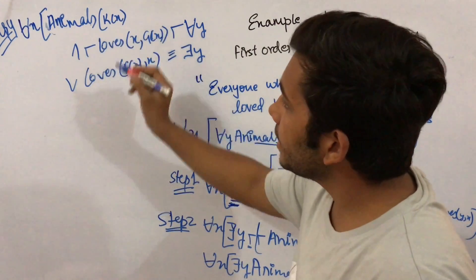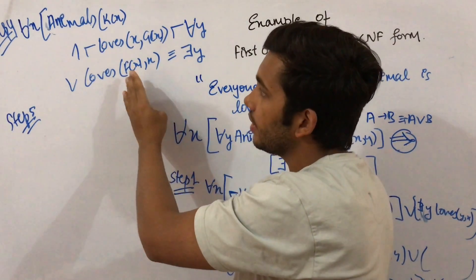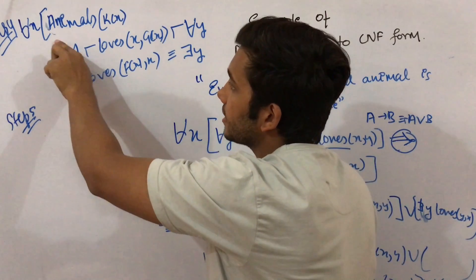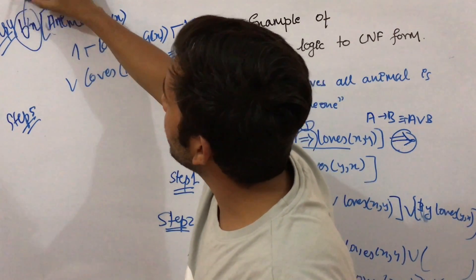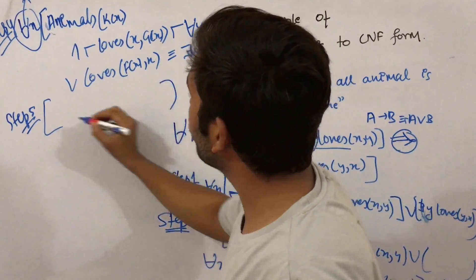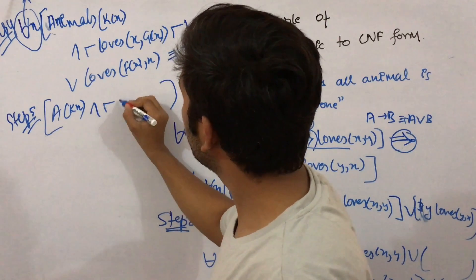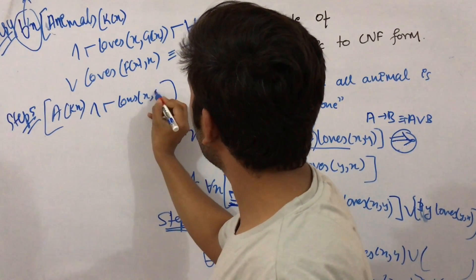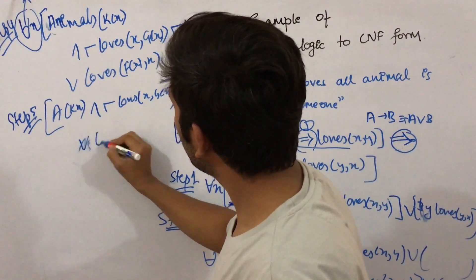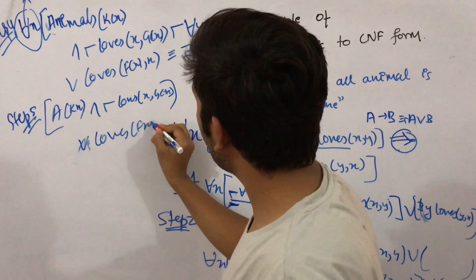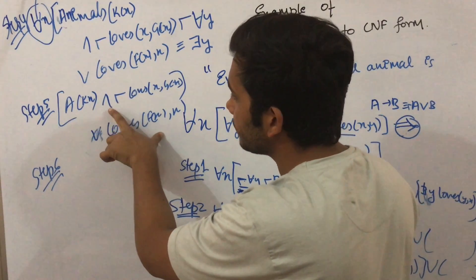In step five, we put all the universal quantifiers to the left of the expression. Here the expression is already on the left, so we eliminate the universal quantifier directly and write the rest of the statement as: animals(g(X)) and negation of loves(X, g(X)), or loves(f(X), X).